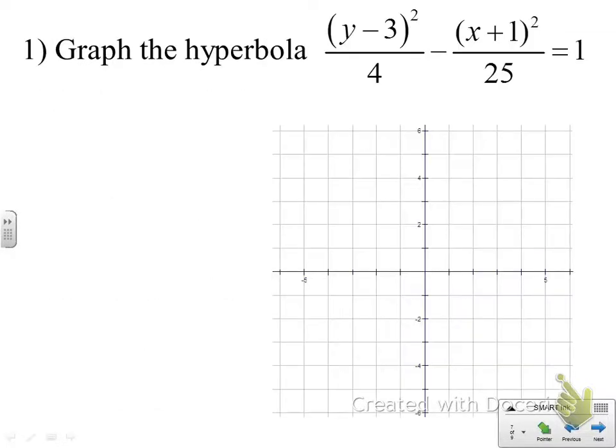This will be the first one that we're going to graph. And we notice that it's a hyperbola because it's got subtraction between the two terms. It's set equal to 1. And notice that the first variable we see, the positive variable, is the y squared, which means when we graph this, our hyperbola should open up and down vertically.